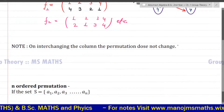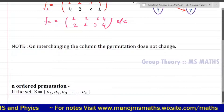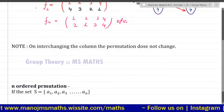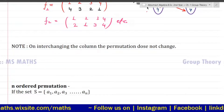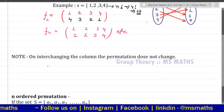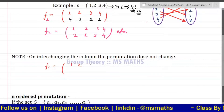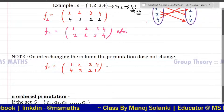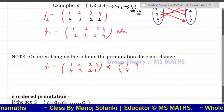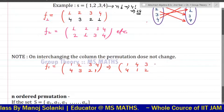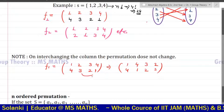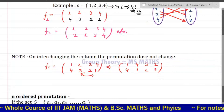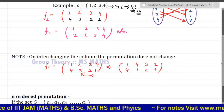Another important concept: on interchanging the columns of a permutation, the permutation does not change. If your permutation F1 has columns and you interchange those columns — for example, F1 has first row {1, 2, 3, 4} and second row {3, 4, 2, 1} — if I interchange two columns, like swapping the column for 1 and 4, it remains the same permutation. So if you change the order of columns, there will be no difference in the permutation.